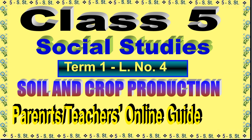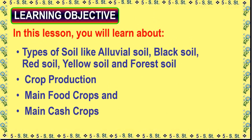Class 5 Social Studies, Term 1, Lesson Number 4: Soil and Crop Production. Learning Objective: In this lesson, you will learn about types of soil like alluvial soil, black soil, red soil, yellow soil, and forest soil, as well as crop production, main food crops, and main cash crops.